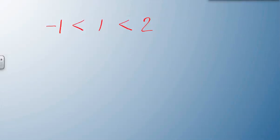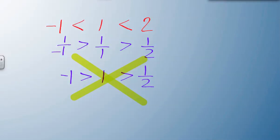When I take the reciprocal of all these, if I'm going to flip this negative 1, it becomes 1 over negative 1, this one becomes 1, and this one becomes 1 over 2. Now if I flip those symbols as well, we have negative 1 greater than 1, which is greater than 1 half. And that, plain and simply, does not work.